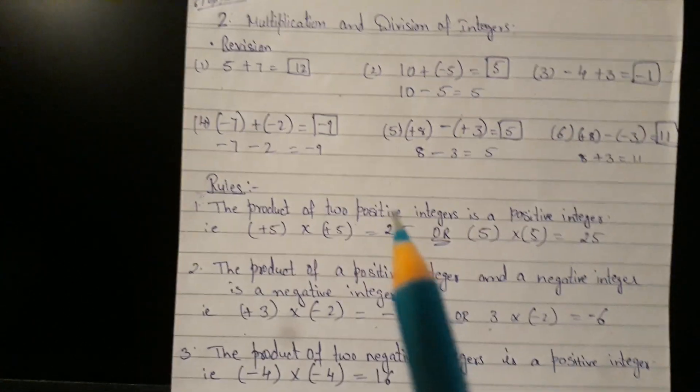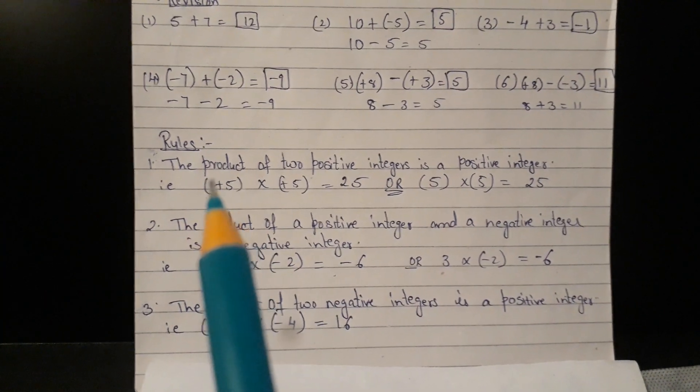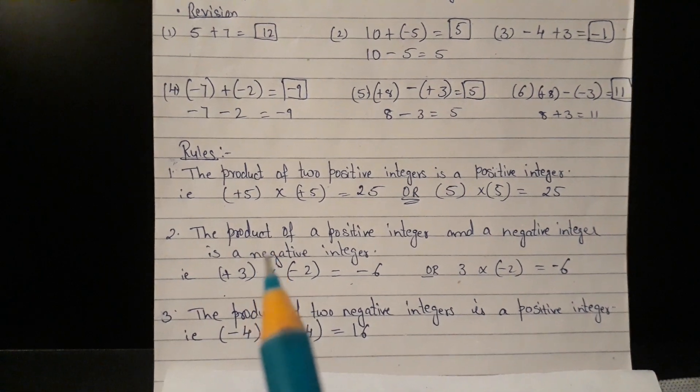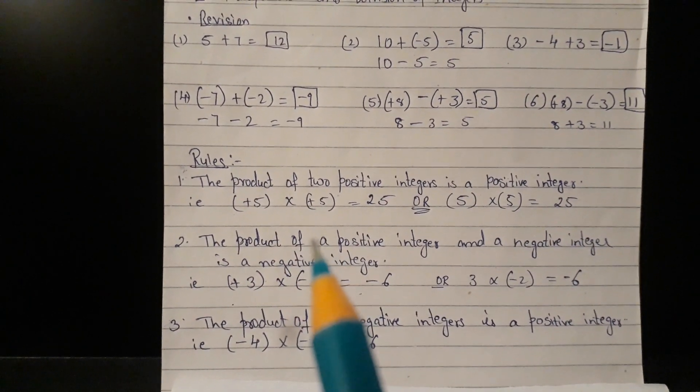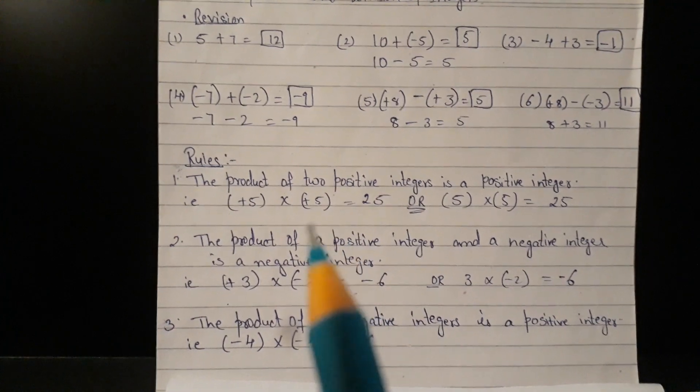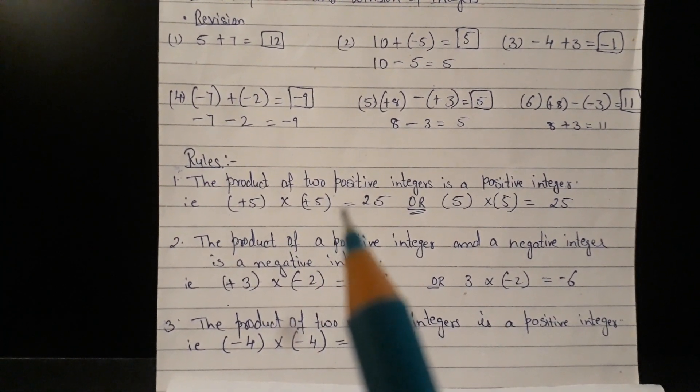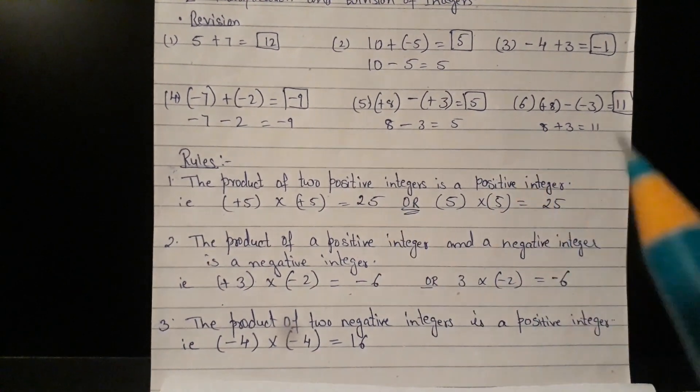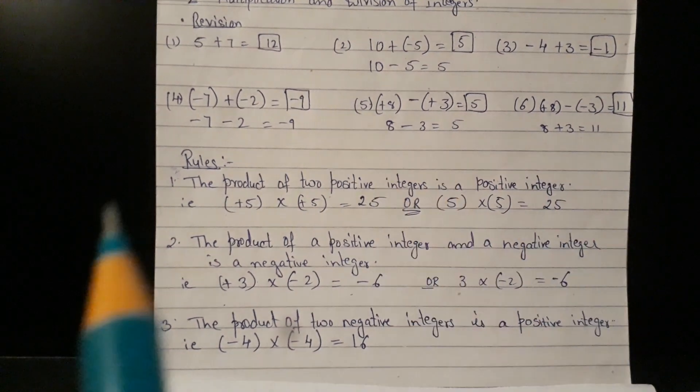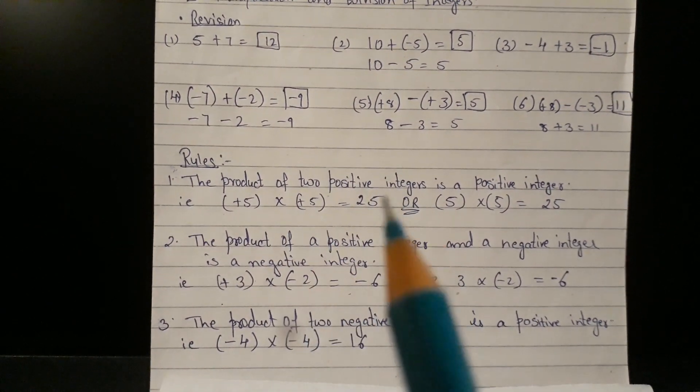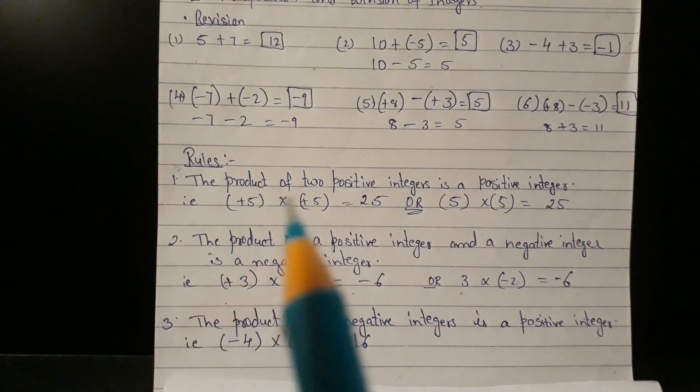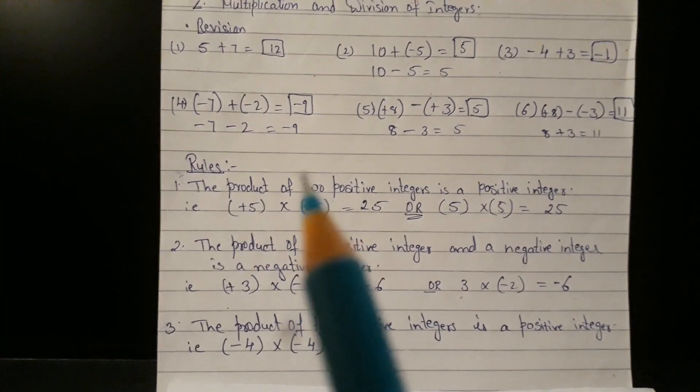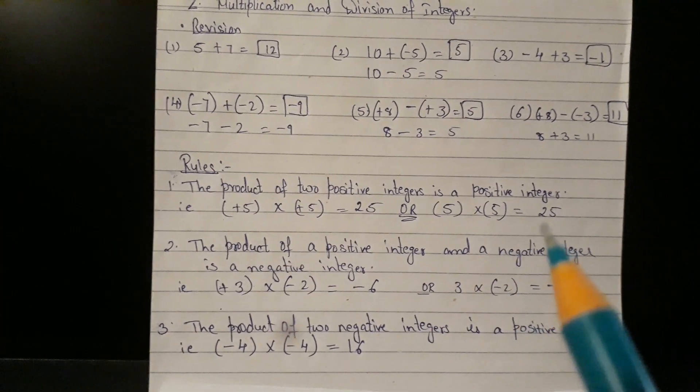Before we proceed further, let us understand the rules. To add, subtract. In this case, we will proceed with multiplication. Today we will restrict ourselves in this video only for multiplication. And we also will be solving practice set only 8. So the first rule says, the product of two positive integers is a positive integer. It means, plus 5 into plus 5 will give me 25. Positive integer into positive integer gives me answer positive integer. Or we could also write that as 5 into 5 gives us 25.